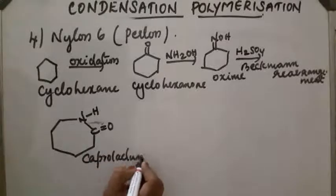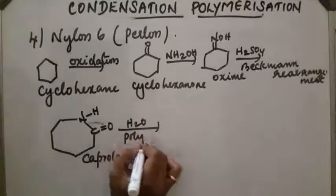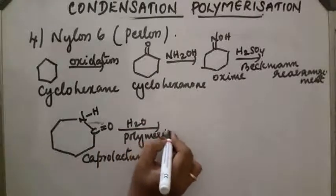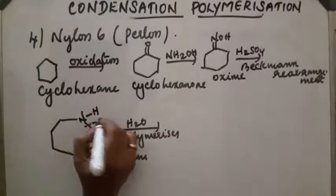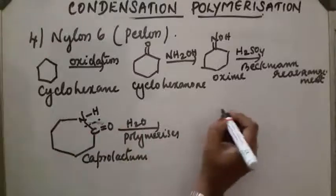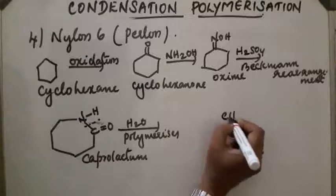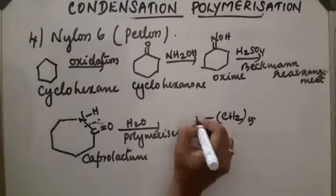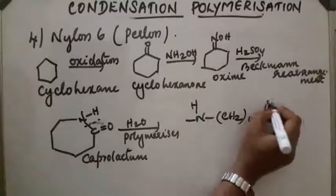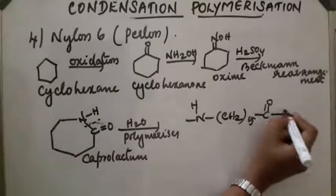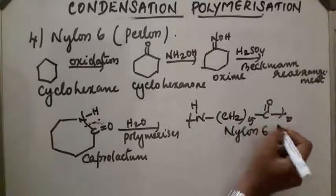With traces of water, caprolactam polymerizes. Breakage occurs in the ring, giving five carbon atoms — CH2 five times — then NH and C double bond O, N times. This is called nylon-6 or perlone.